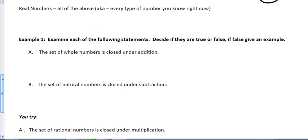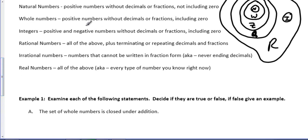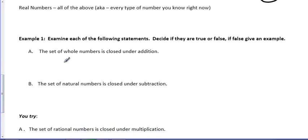Example one asks us to examine each of the following statements and decide if they are true or false. If they're false, we're asked to give an example. We're actually going to give an example both ways because that's how you get to understand this. First, whole numbers. Let's go back to the definition. Whole numbers are positive numbers without decimals or fractions. They include the number zero.